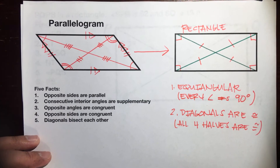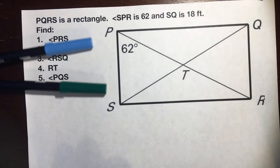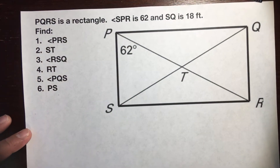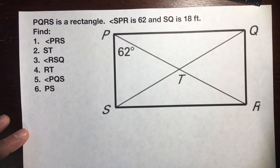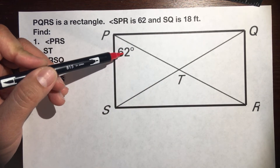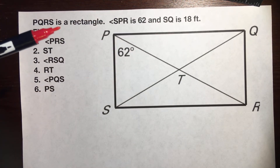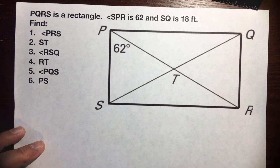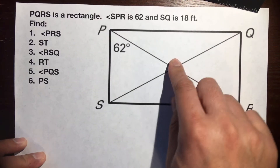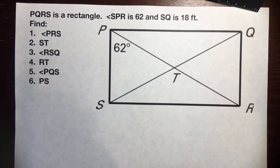Let's use these facts on this next problem. PQRS is a rectangle. Angle SPR is 62 degrees, and SQ is 18 feet. Find all of the missing measures. I suggest pressing pause to draw this and try it on your own, then unpause and see if you have the same answers.